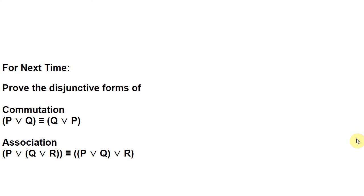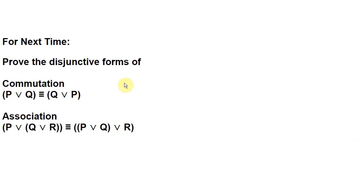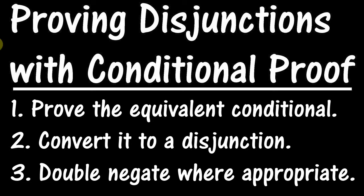Okay, in the next video, we're going to try to prove the disjunctive forms of commutation and association, and we're going to be doing that in a video called Proving Disjunctions with Conditional Proof. Thank you for watching and look for the next video. Also, check below. There will be a link to the blog page for this video, which goes over some of the same material, and will also give you access to the blog pages about other videos in this series.